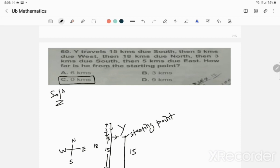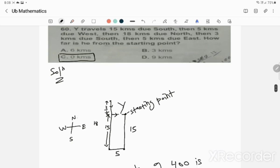Question 60: Why travels 15 kilometers due south, then 5 kilometers due west, then 18 kilometers due north, then 3 kilometers due south, then 5 kilometers due east. How far is he from starting point? If you move downward it's south, upward is north, this side is east, that side is west.